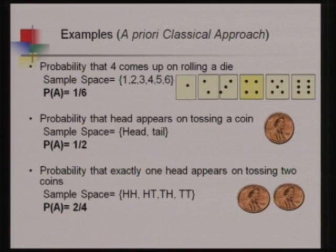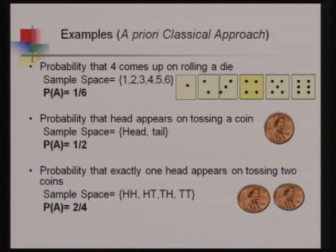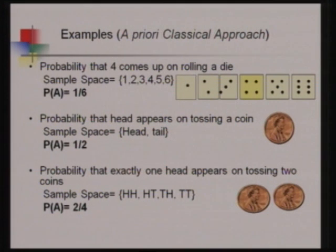Another example: tossing a coin — the chance that head will appear. The sample space is head and tail, and head is one favorable outcome out of two, so the probability is 1/2. Third example: probability that exactly one head appears when tossing two coins. The sample space is HH, HT, TH, TT — four outcomes. Exactly one head appears in the second (HT) and third (TH) outcomes, giving two favorable cases. So the probability is 2/4.